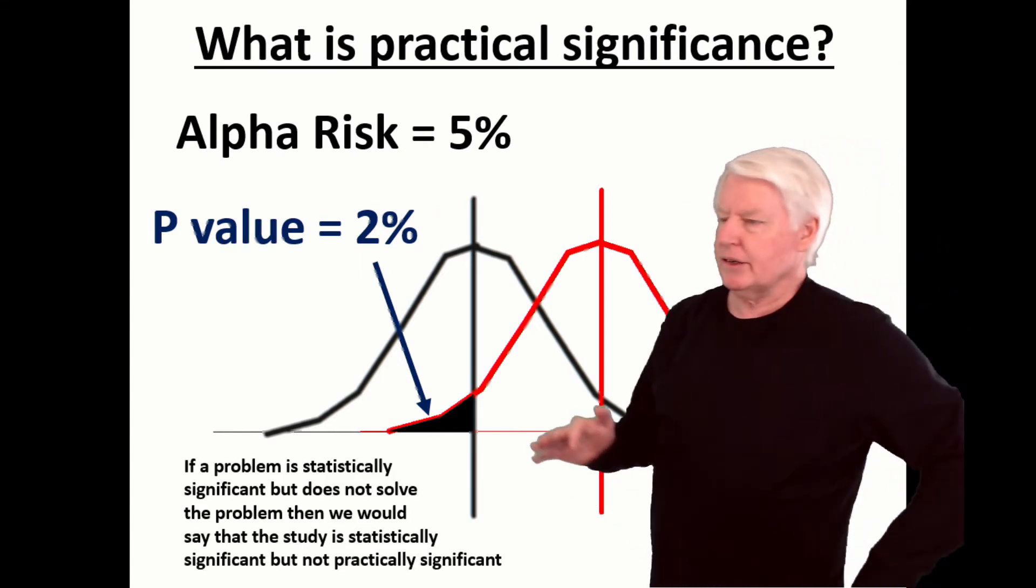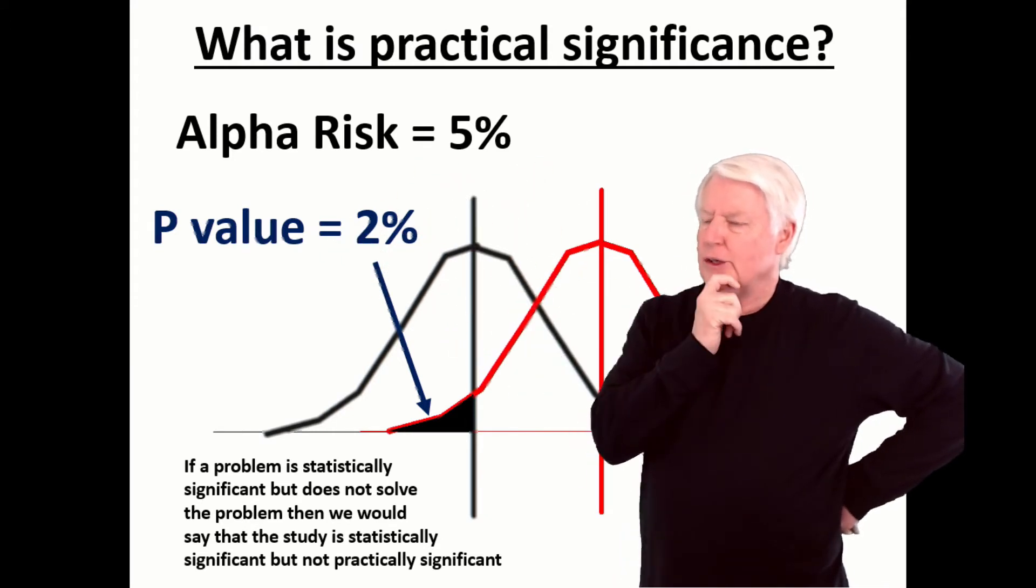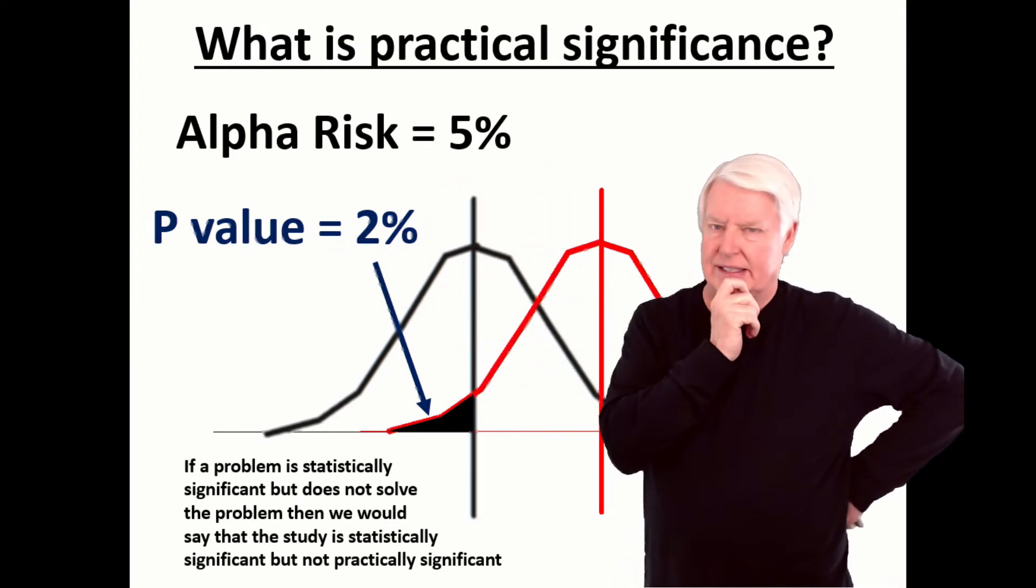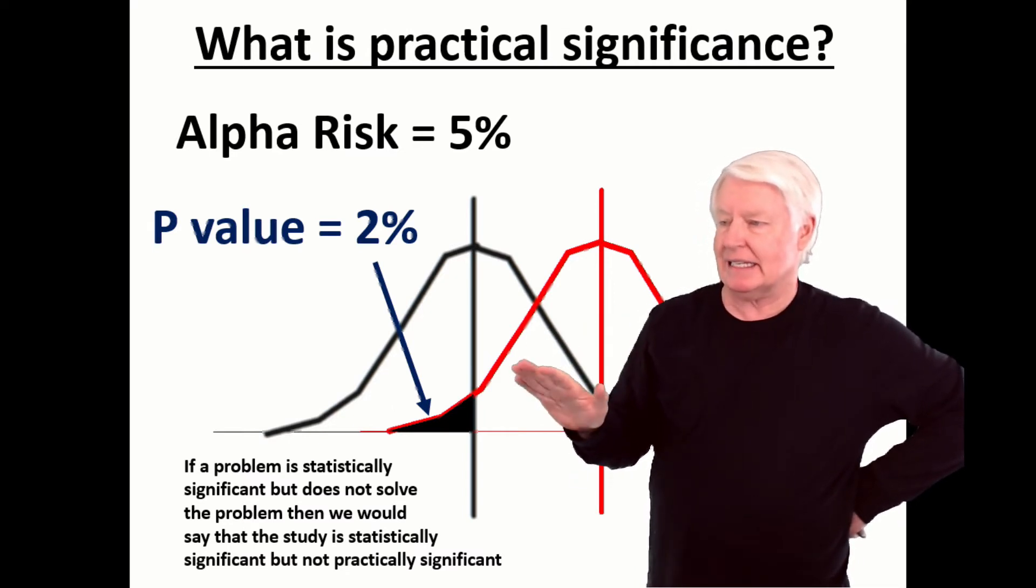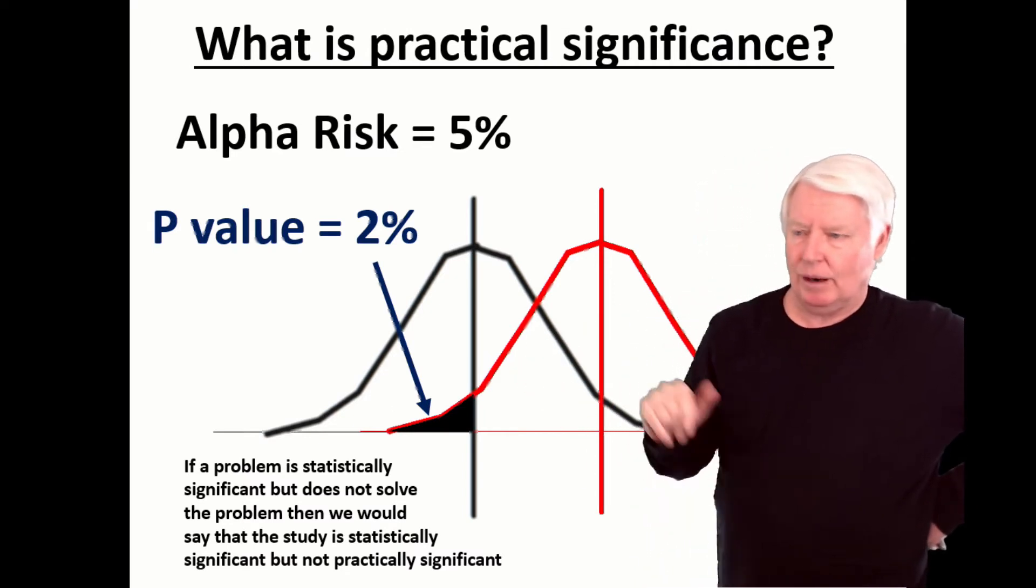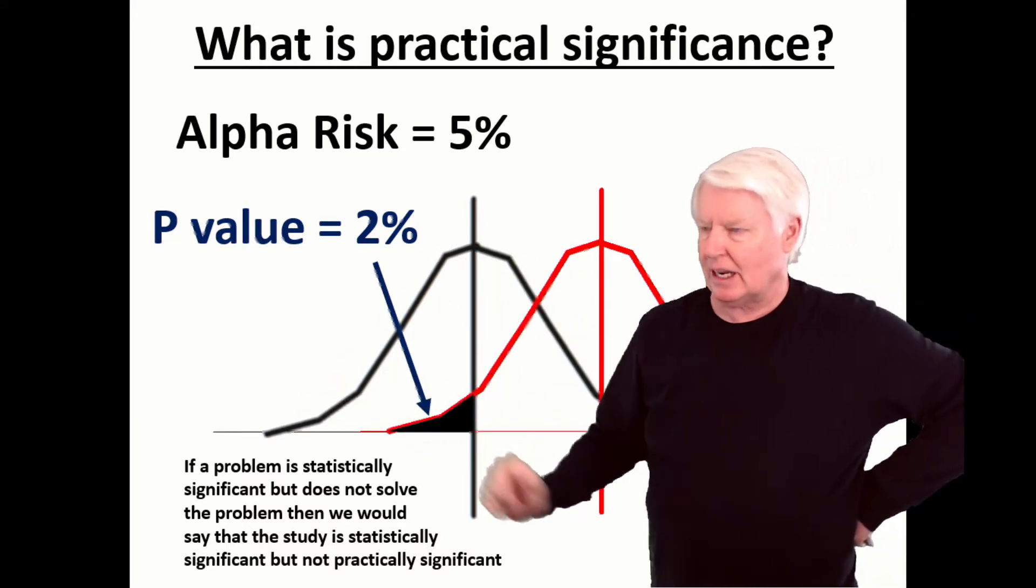Now, here's another example. Alpha risk 5%, P-value 2%. So this is statistically significant. However, let's say, yes, it is statistically significant. However, the objective of this study, of this treatment, is to save the lives of the patients from cancer, from tumor growth rates.